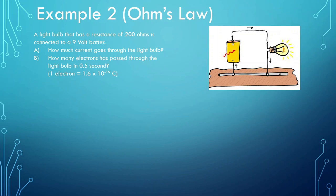Now let's look at this other problem. A light bulb that has a resistance of 200 ohms is connected to a 9-volt battery. How much current goes through the light bulb? So this is what we're going to be looking at — this is our main equation here, Ohm's law: voltage is equal to the current times the resistance.